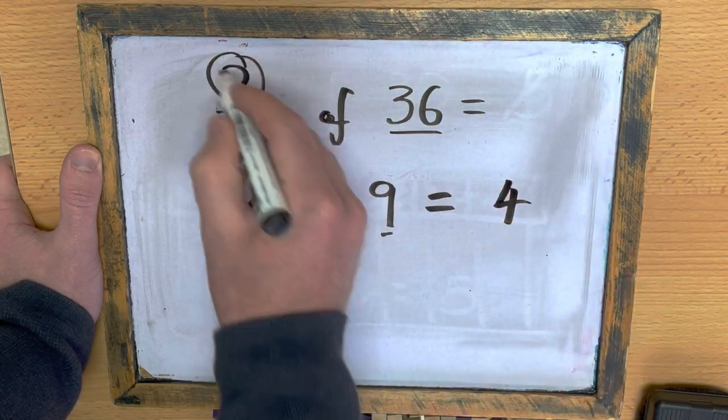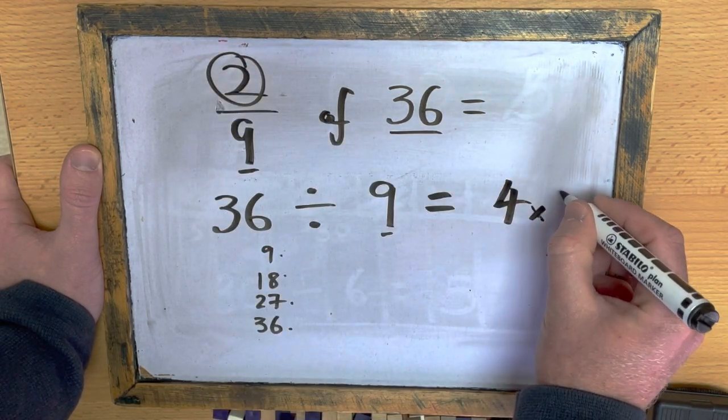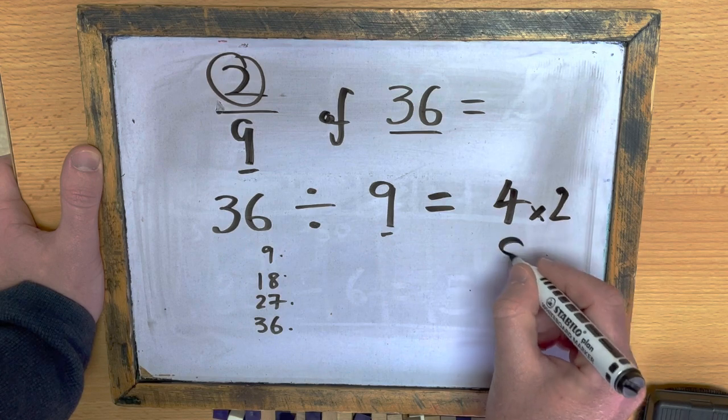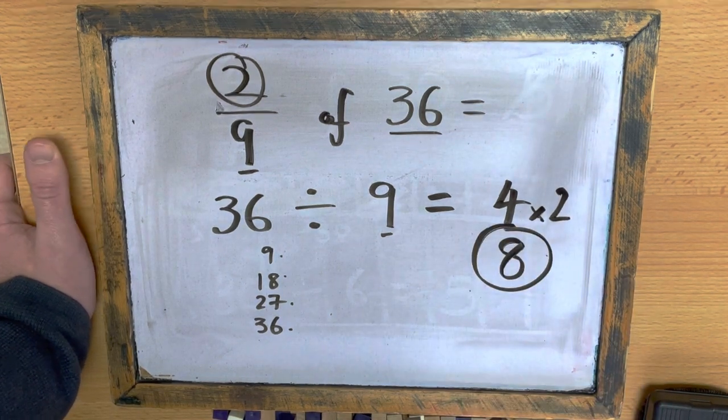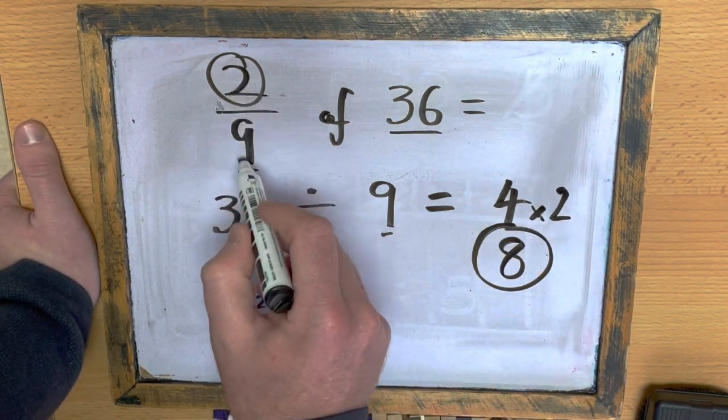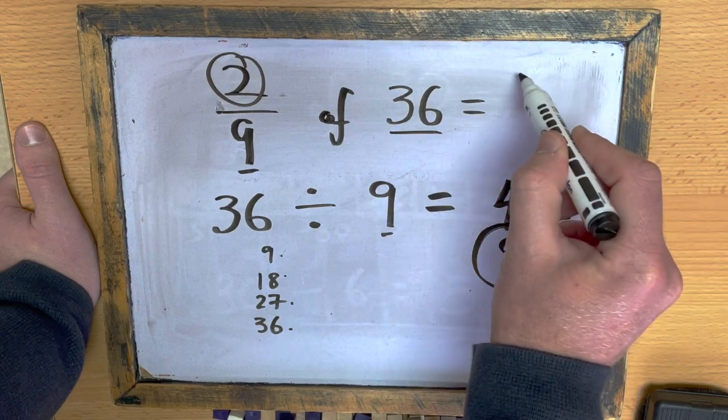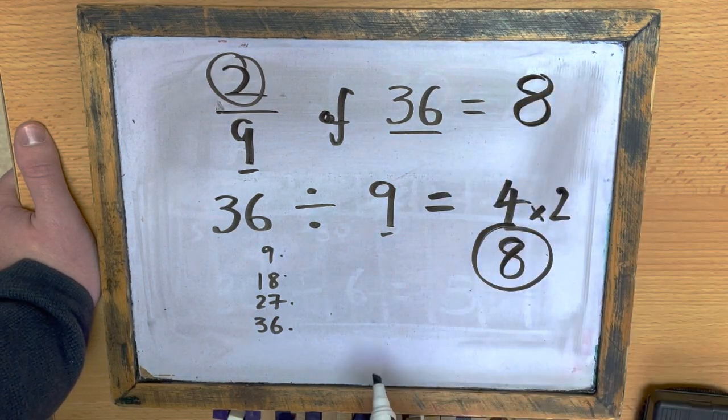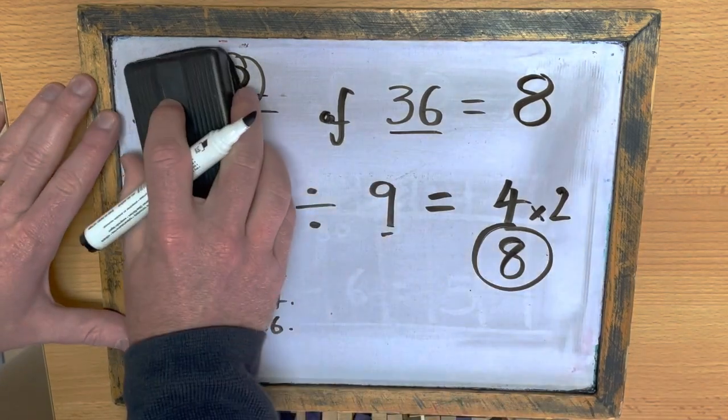But what I've worked out there is just one-ninth. So, if I want to work out two-ninths, I need to multiply my answer by 2. And that would give me an answer of 8. So, two-ninths of 36 is 8.